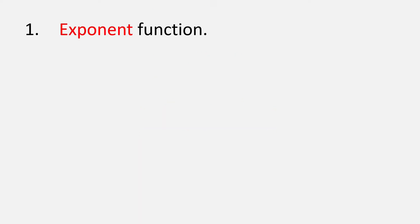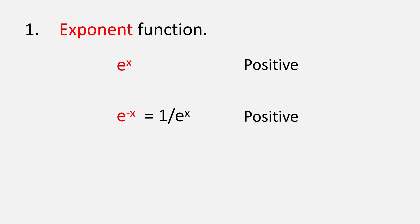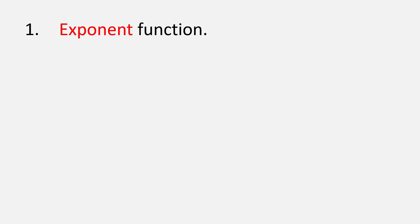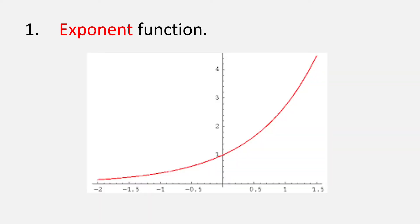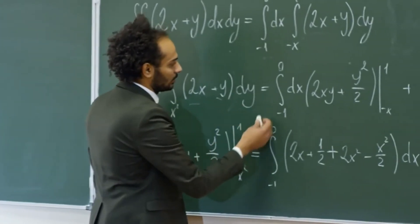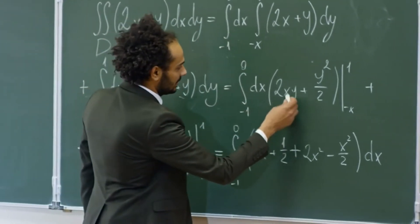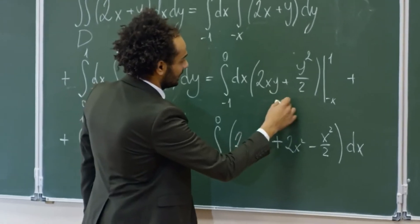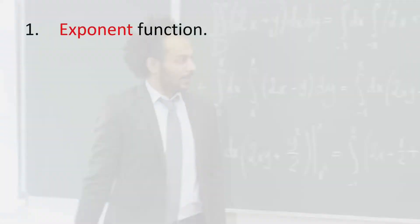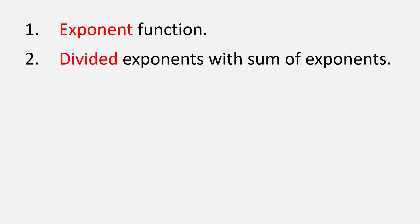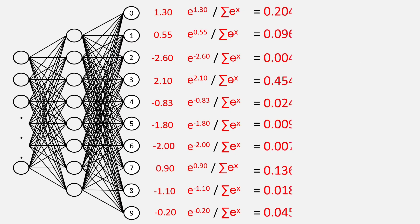Let's summarize what we did. We first applied the exponent function, which gives us two benefits. One, it converts all numbers — positive and negative — to positive. If you remember the e to the power x graph, the graph never turns negative. The second advantage is that it helps in finding derivatives easily, as we will see shortly. After that, we divided the exponents by the sum of individual exponents, which means we now have a valid probability distribution, and if we sum all the individual values, we get 1.